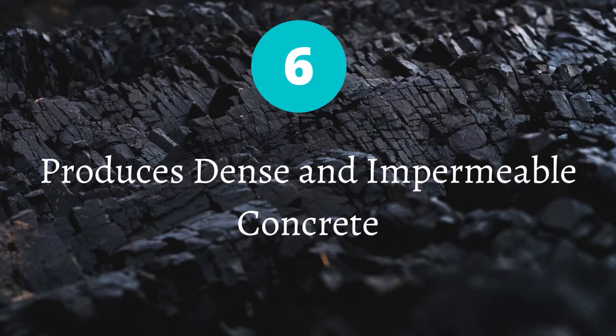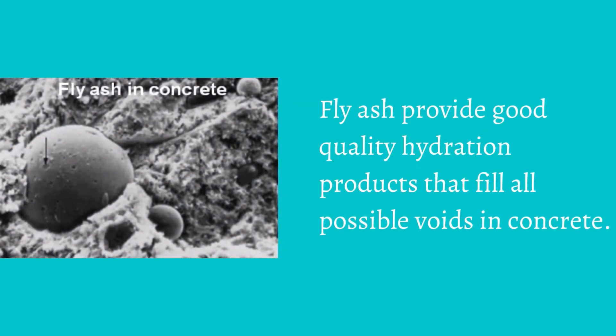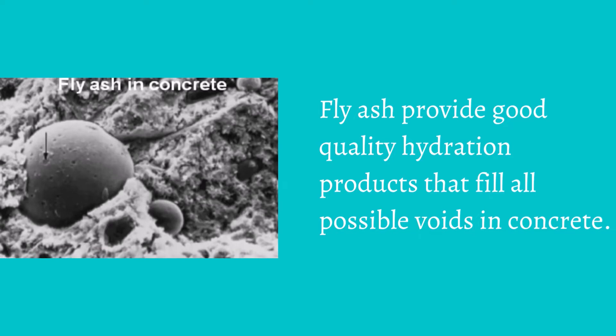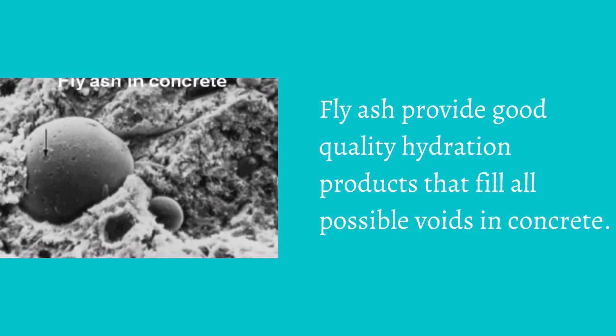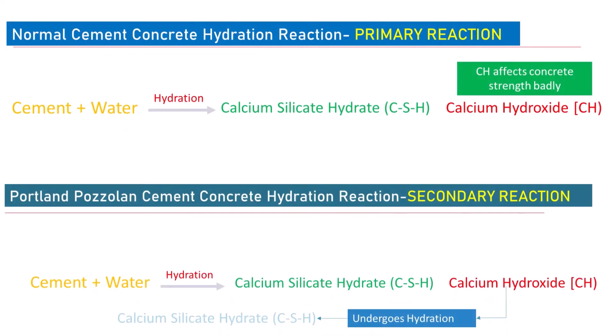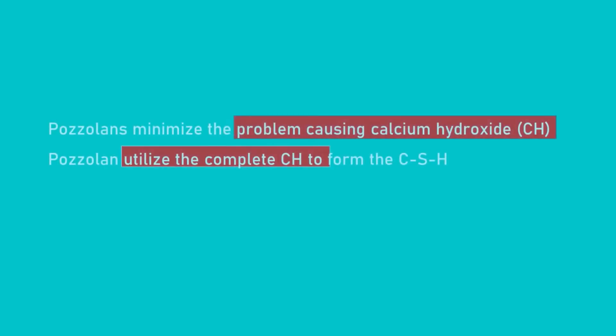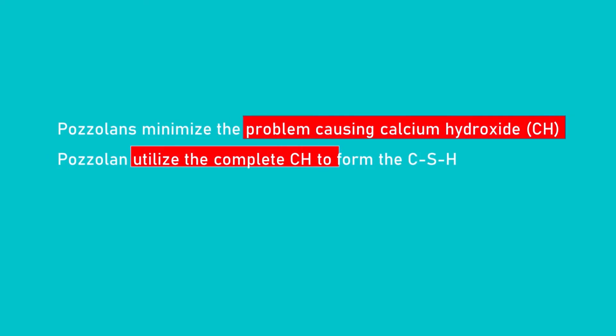Benefit 6: Fly ash produces dense and impermeable concrete. Fly ash produces good quality hydration products that fill all possible voids in the concrete. The main causes of voids in concrete are incomplete hydration products, incomplete cement granules, and the presence of calcium hydroxide (CH). All these are consumed by the fly ash pozzolanic reaction, enabling the filling of voids. Hence, a dense and impermeable concrete is achieved.